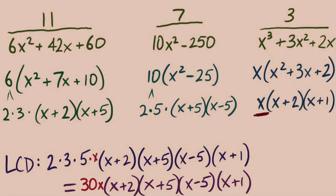30x at the beginning, and then our x plus 2, x plus 5, x minus 5, x plus 1. Just a little lesson to be cautious. When we're building our LCD, make sure that every single piece is accounted for.